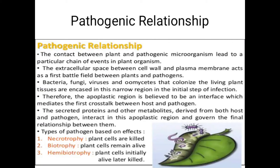The secreted proteins and other metabolites derived from both host and pathogen interact in this apoplastic region and govern the final relationship between them. جو proteins اور other metabolites host اور pathogen سے نکلتے ہیں وہ اس apoplastic region میں interact کرتے ہیں — اور اس کا final result types of pathogen based on effects ہوتا ہے۔